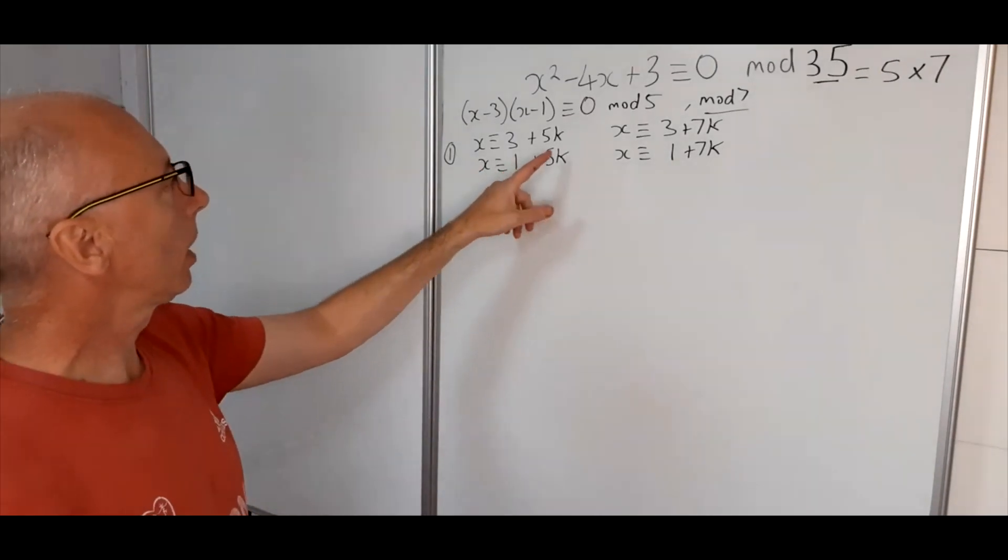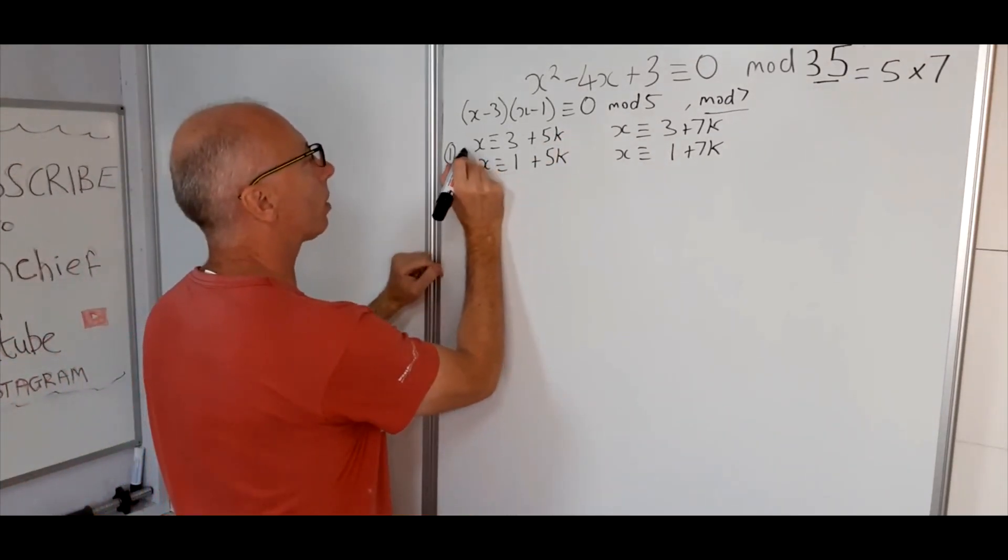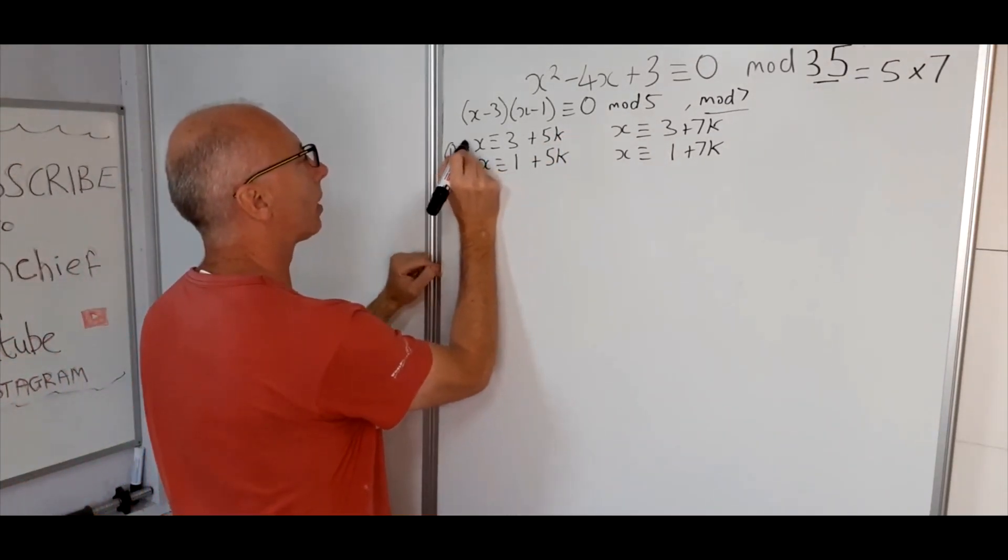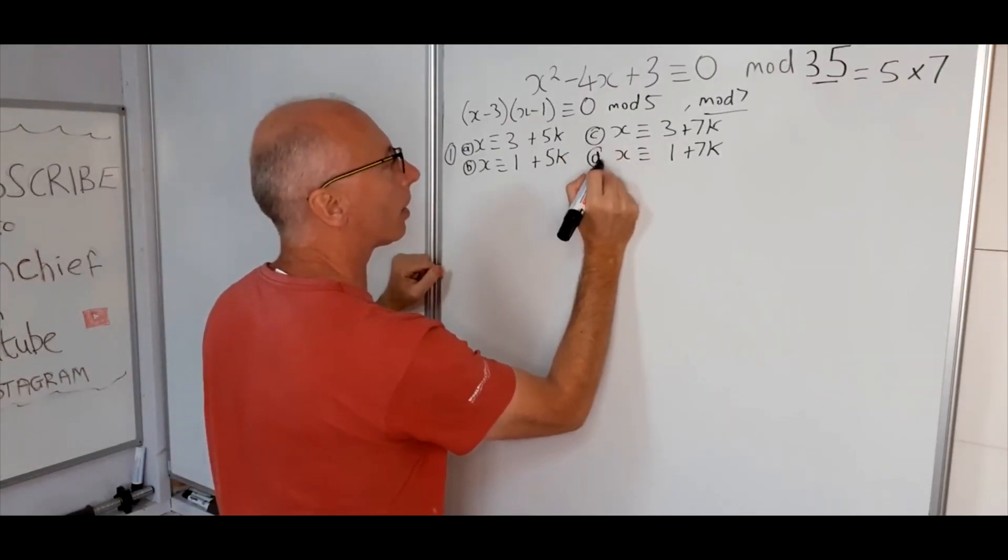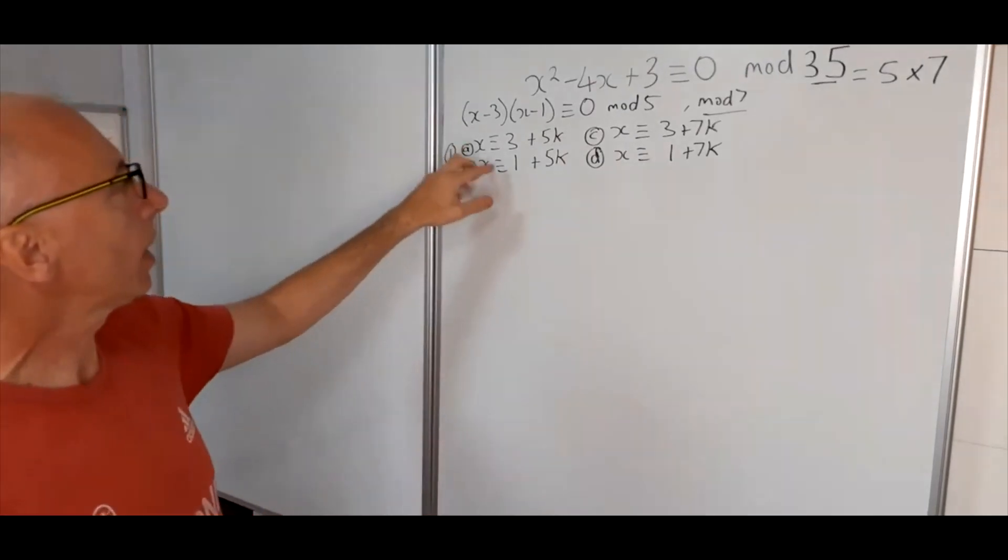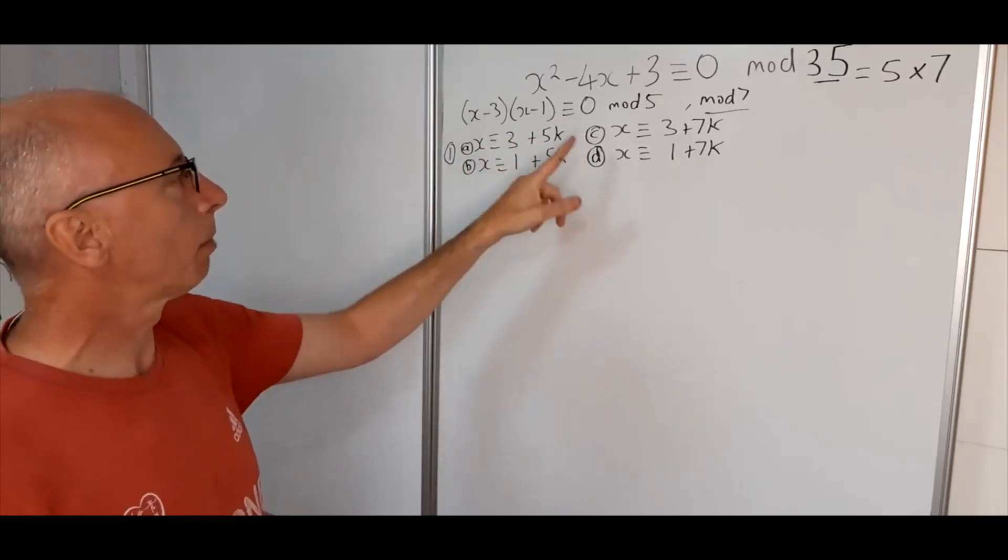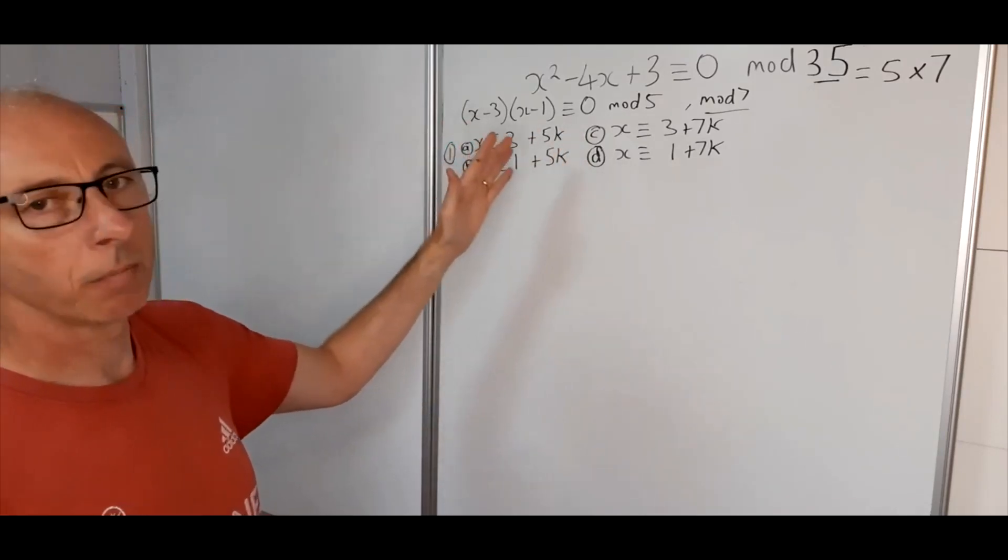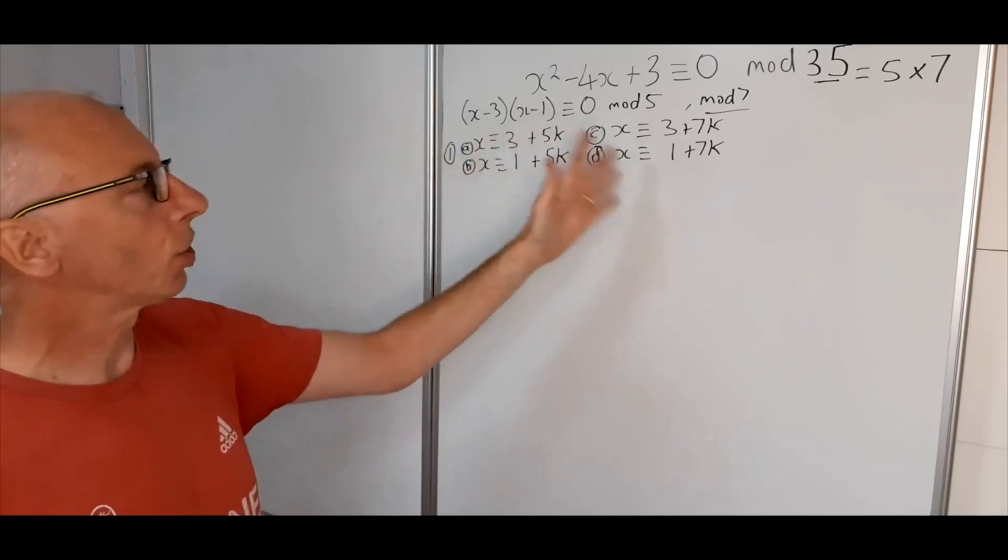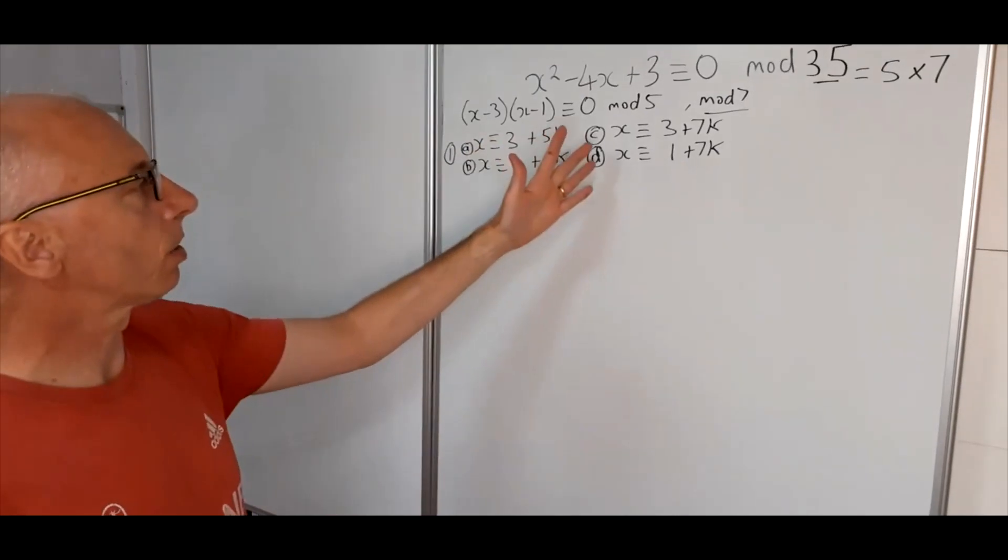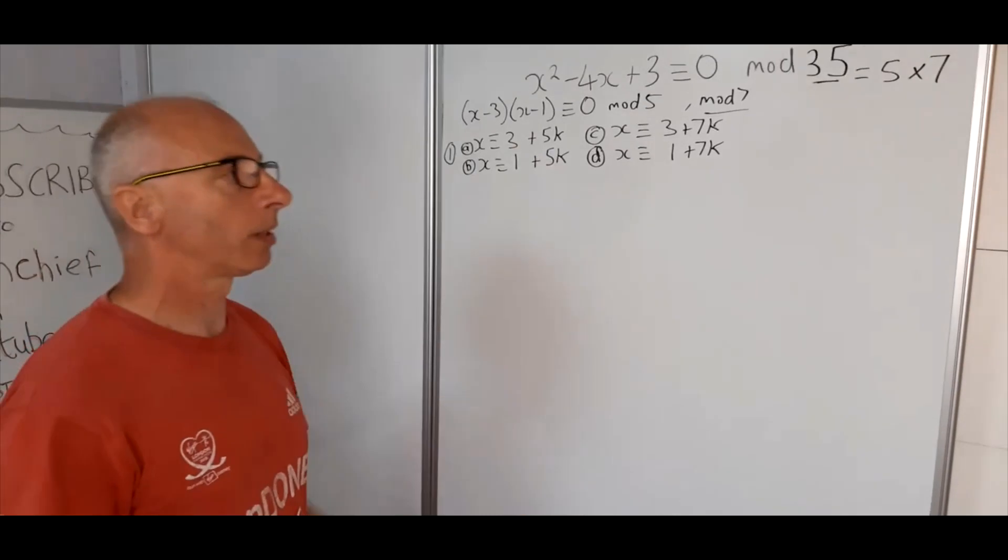So now what we need to do is combine the first one here, so we call this equation A, we call this equation B, this one equation C and this one equation D. We need to get A combined with C and A combined with D, B combined with C and B combined with D. We try and solve them like the Chinese remainder theorem for each one, so that should give us four solutions.